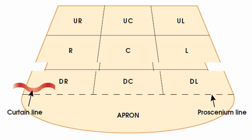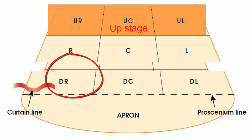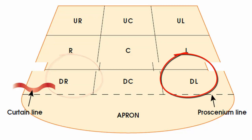The acting area on stage is divided into nine locations, and directions from playwrights and directors are usually given for those locations. Abbreviations are used regularly. Generally, the downstage area is stronger than the upstage area because it is nearer the audience. Stage right is stronger than stage left because the audience is conditioned to look from left to right in reading, and carries this habit into all observations.